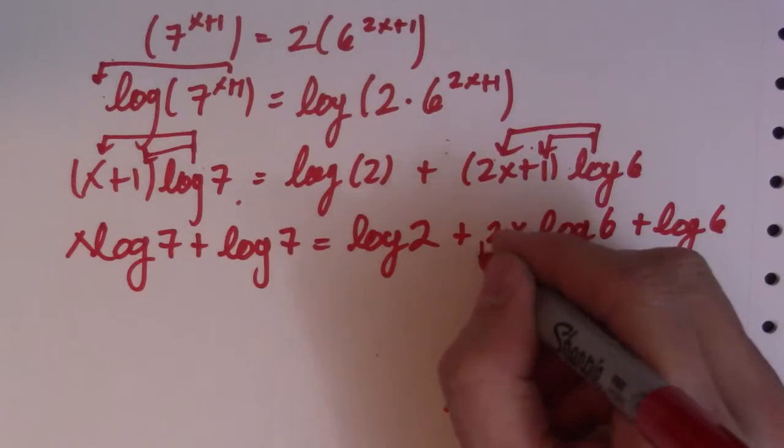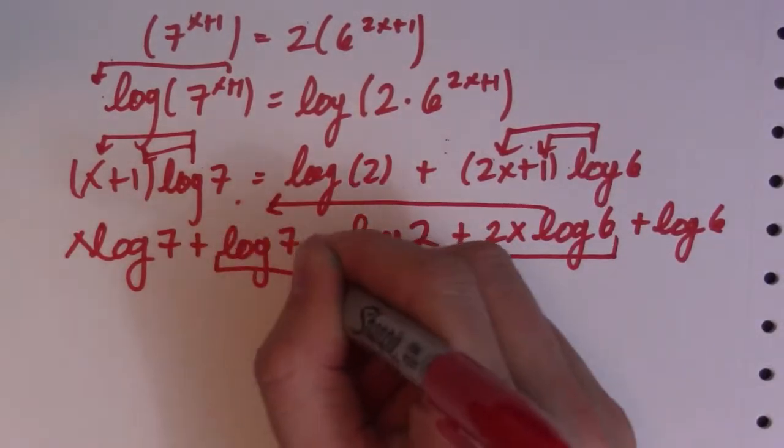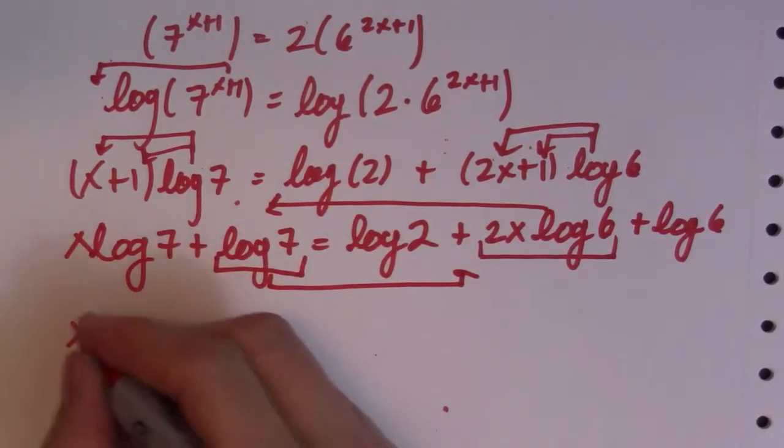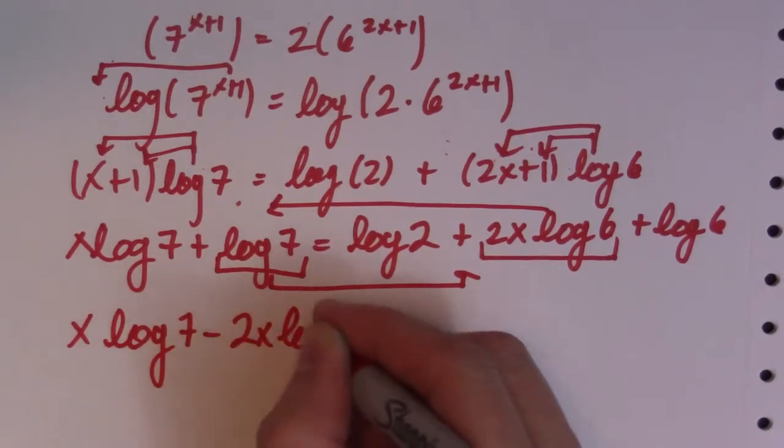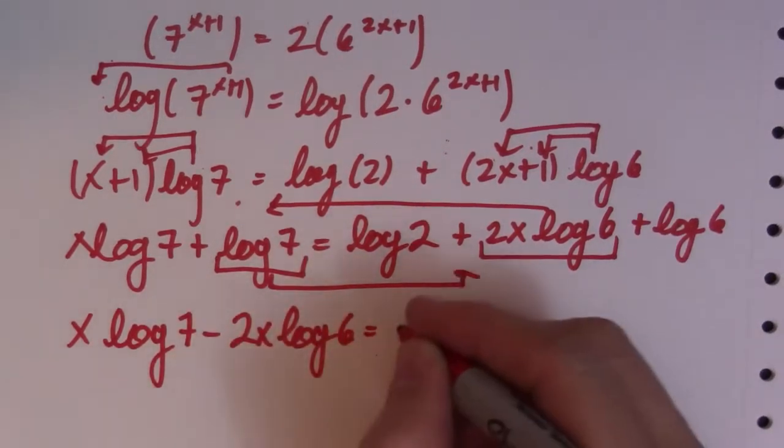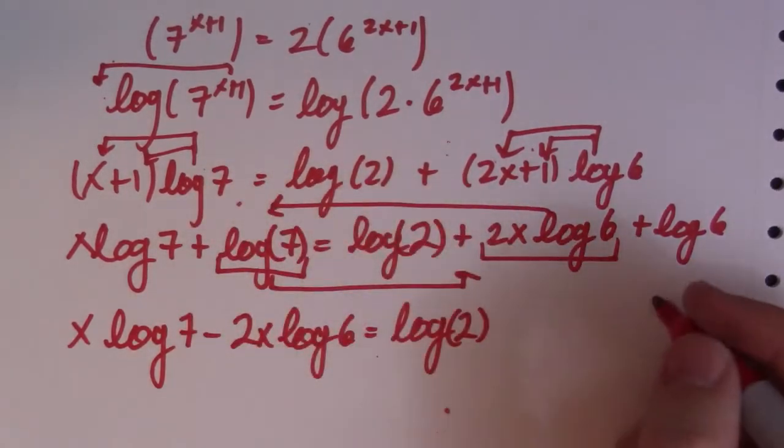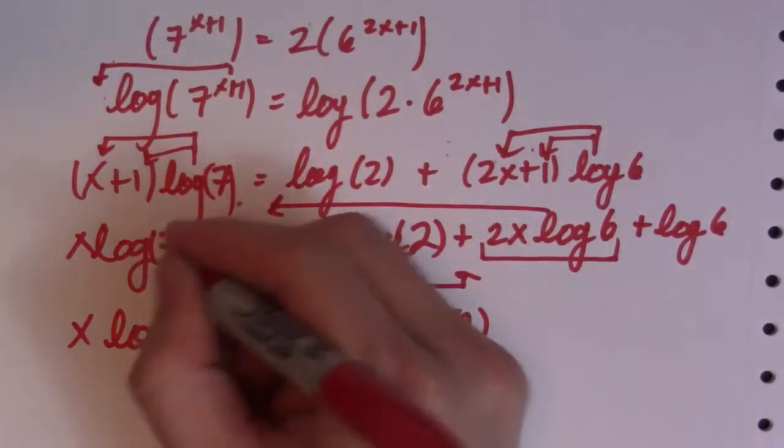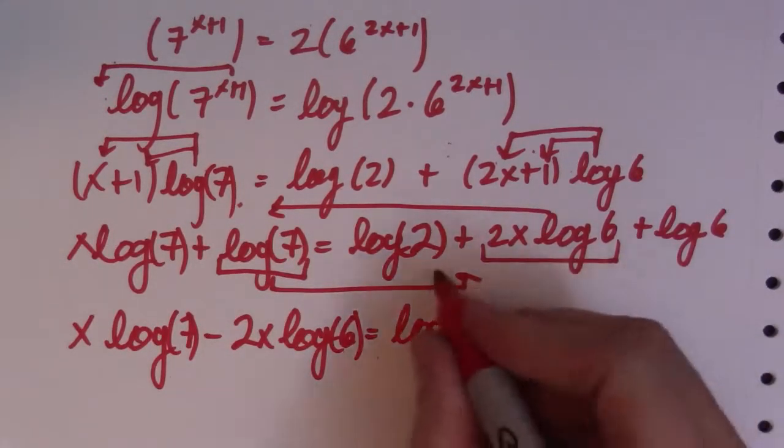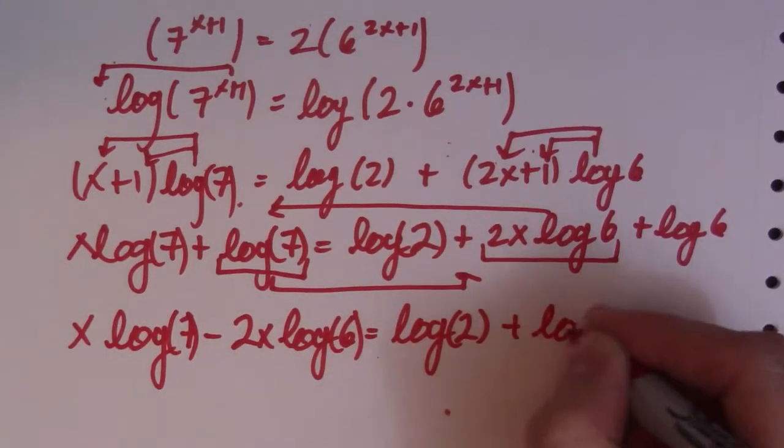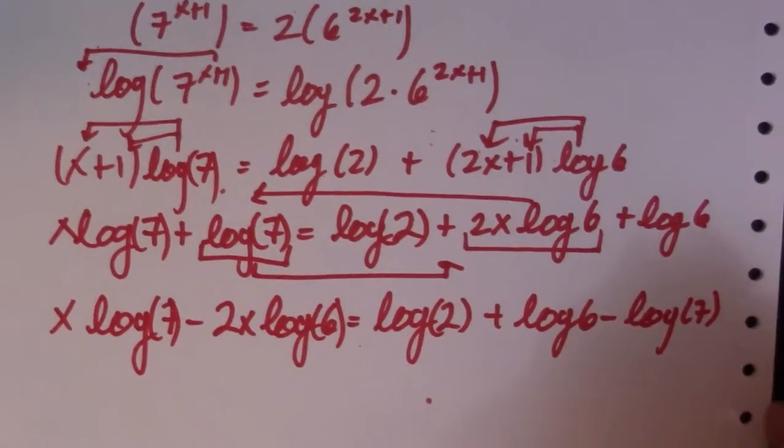So again, I get my x's together. So this guy goes over here. This guy goes over this way. So I get x log of 7 minus 2x log of 6. That's going to be log of 2. Log of 2 plus log of 6 minus log of 7. Just like that.